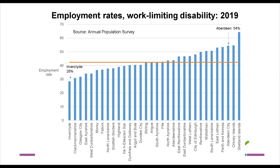This is important because if we're thinking about income from employment, where parents do want to work and work is flexible enough, it's important to highlight the variability in employment rates. Employment rates pre-COVID — this is 2019 data — were a lot lower in places like Inverclyde than they were in Aberdeen City and Shire, for example.